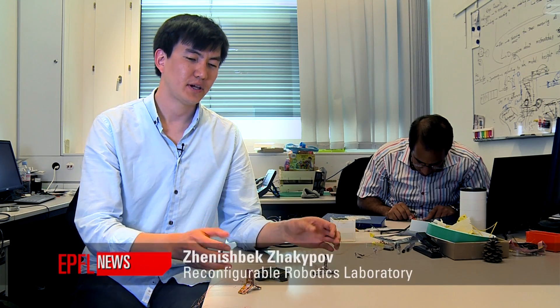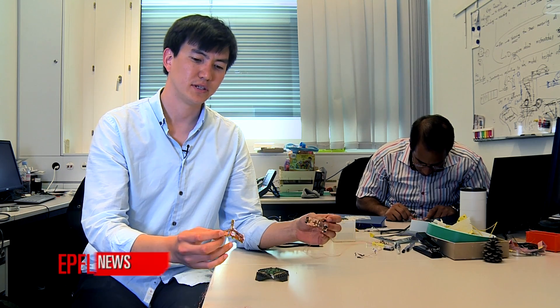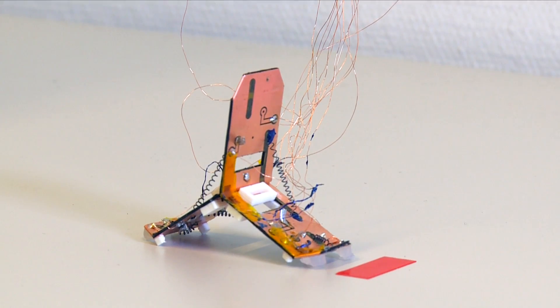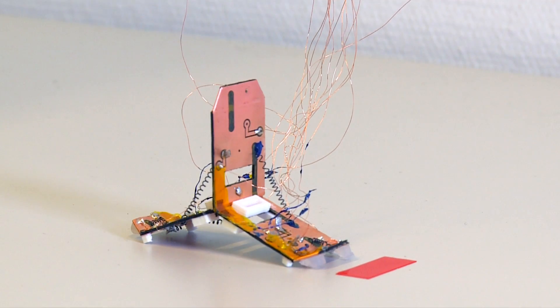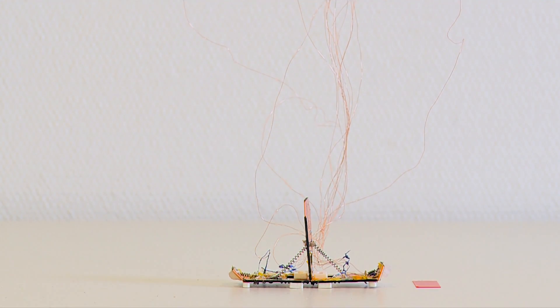We've developed two types of Robogami in our lab. The first one is a tri-bot, which is a multi-locomotive robot, which has crawling and jumping properties. Both modes are inspired by nature. The crawling is inspired by the inchworm gait and the jumping is inspired by fleas.